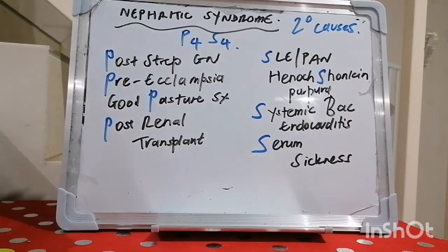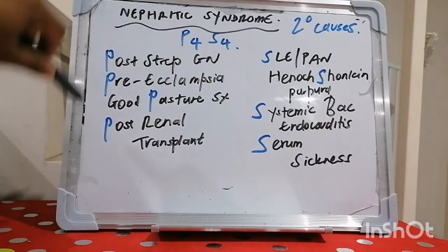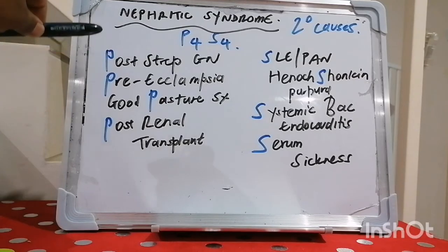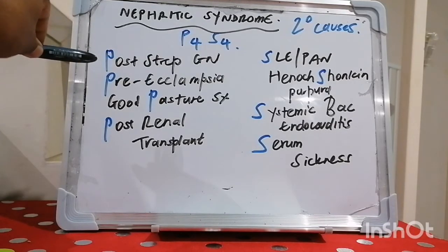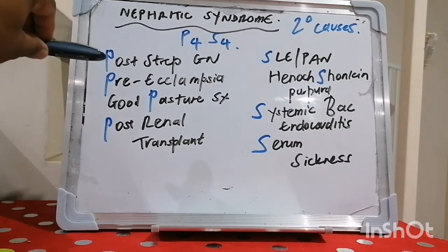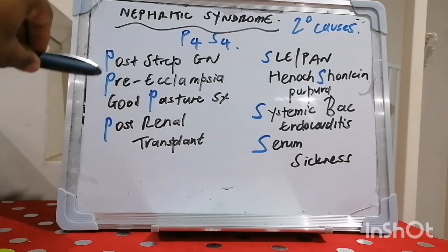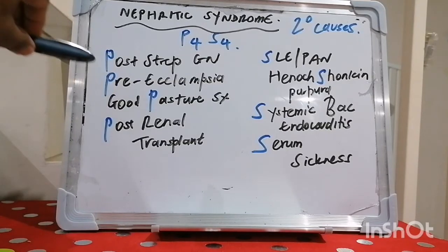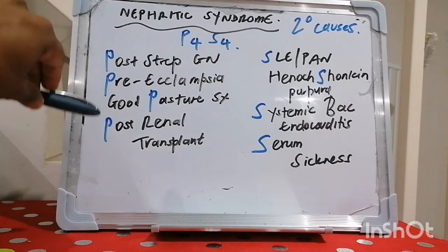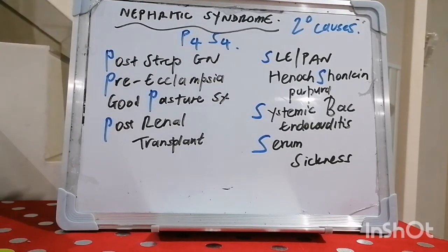Secondary causes of nephritic syndrome — let's talk about the four P's. Think: post, pre, and past. Post-streptococcal glomerulopathy is very common, especially in third-world countries. Pre-eclampsia occurs commonly after the 20th week of gestation in pregnant women. Goodpasture's syndrome — otherwise termed anti-GBM disease — presents with hematuria and hemoptysis. And post-renal transplant is also included.